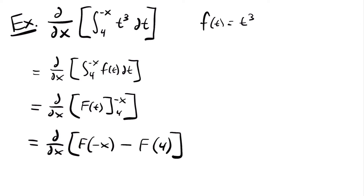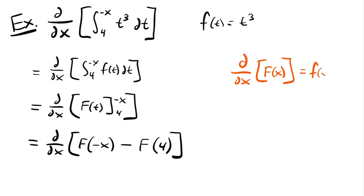We're going to need to use the chain rule to take the derivative of the term with negative x. We have an outside function — the antiderivative — and an inside function of negative x. When the inside function was just x, we technically used the chain rule, but the derivative of x is 1, so it didn't matter. Here, for negative x, we multiply by the derivative of negative x, which is negative 1. So this equals small f of negative x times negative 1, and the derivative of capital F of 4 is 0 since it's a constant.